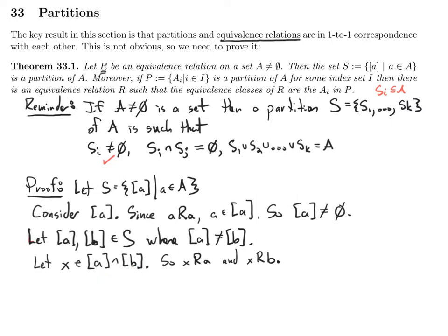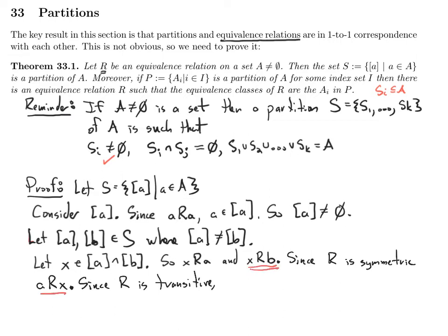Let x be an element of the intersection of our two equivalence classes. That means x is related to a, and x is related to b. Since R is symmetric, we know that since x is related to a, it also works the other way: a is related to x. And since R is transitive, we have a is related to x, and x is related to b, so that means a is related to b.